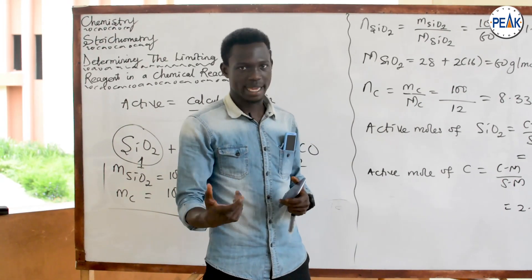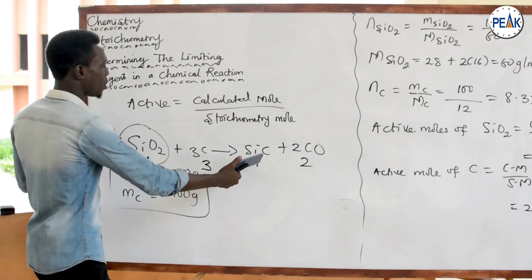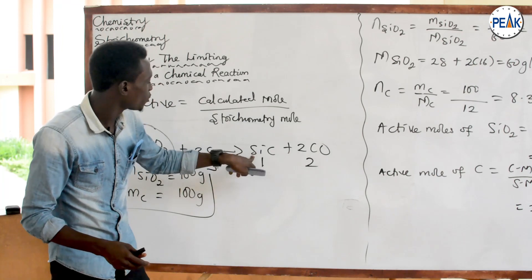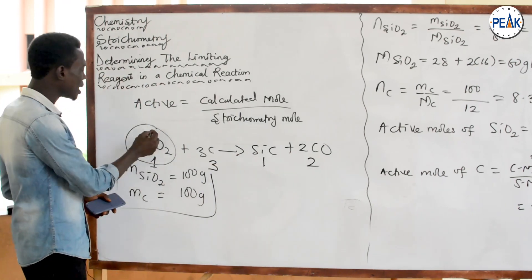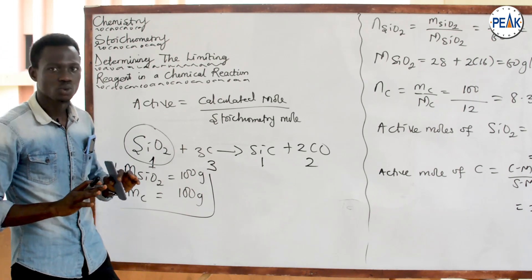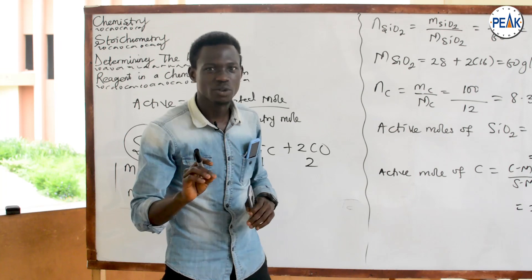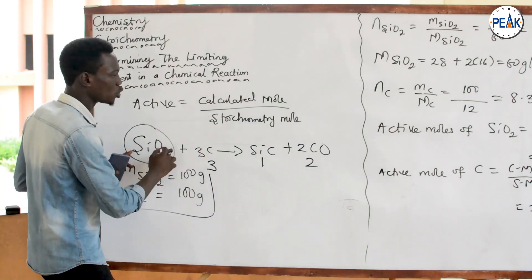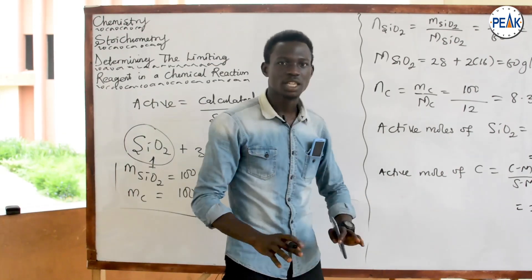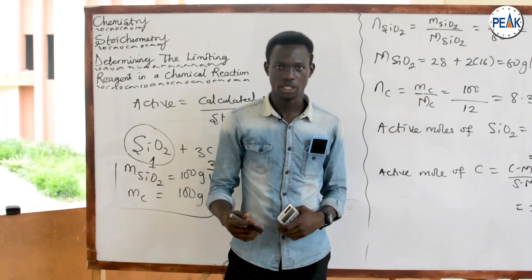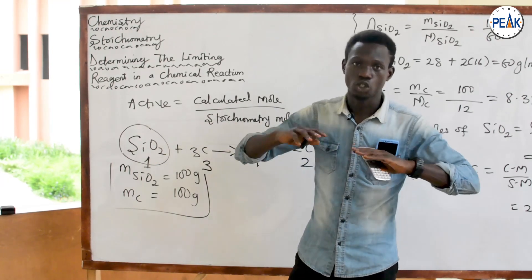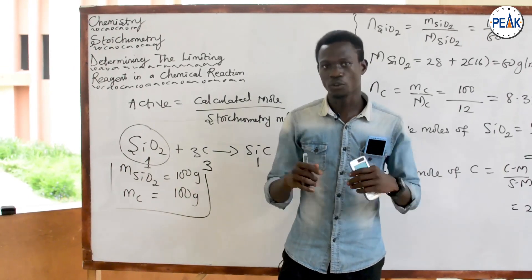The limiting reagent is the reagent first completely used up in a chemical reaction, and it determines the amount of product formed. If a question asks for the amount of CO or SiC produced, you relate SiO₂ to the desired product. To summarize: first identify stoichiometric moles from the balanced equation, then calculate the calculated moles, then find the active moles — the reagent with the smallest active mole is the limiting reagent. Thank you for staying with us, and join us for the next episode of Made Easy Clinic.